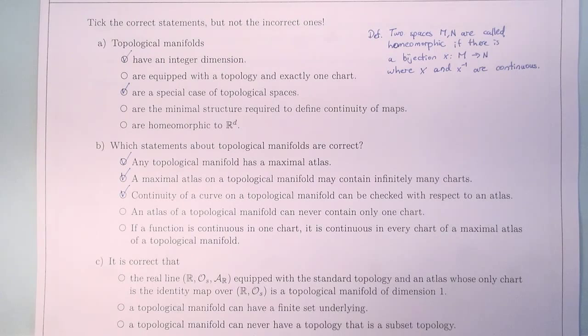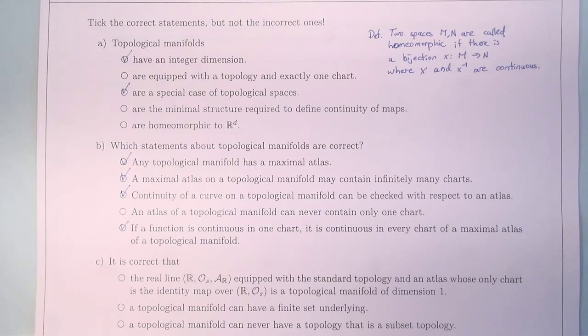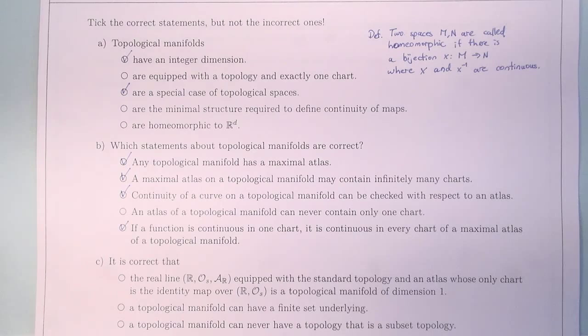In the last question: if a function is continuous in one chart, it is continuous in every chart of a maximal atlas of a topological manifold. Although this question is a little bit ambiguous, this is correct. We look at the function that is continuous in one chart, and then we look at another chart that has overlap with the original chart. Due to the composition of continuous maps being continuous, the function is also continuous in this other chart. We can look at even more overlaps, and we see that the function is continuous in all charts of a maximal atlas.